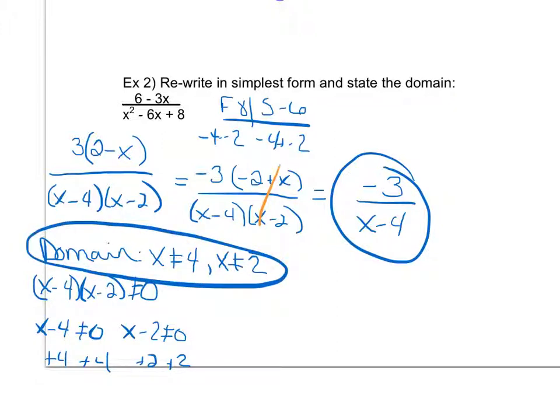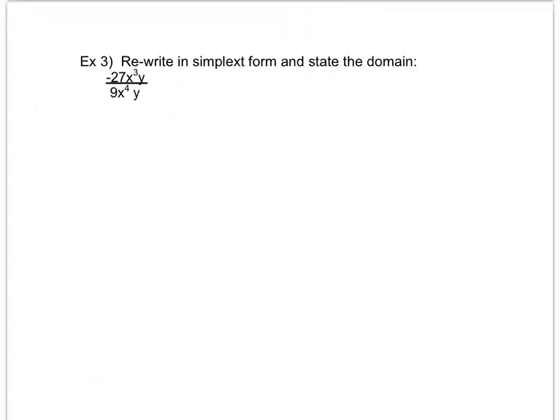Looking at one final example this is a good one for you to pause and try on your own. So this one looks a little bit different. This actually is a little bit more basic. On the previous ones we had binomials and trinomials. Notice on this one I just have a monomial on top and a monomial on the bottom. So here this is very similar to what we did in the previous unit when we simplified with exponents. Notice on this one all I really need to do is say negative 27 and 9 can both be divided by 9 leaving me a negative 3 and a 1. x cubed and x to the fourth can both be divided by x cubed leaving me with an x on the bottom and my y's cancel out completely so I just have negative 3 over x.